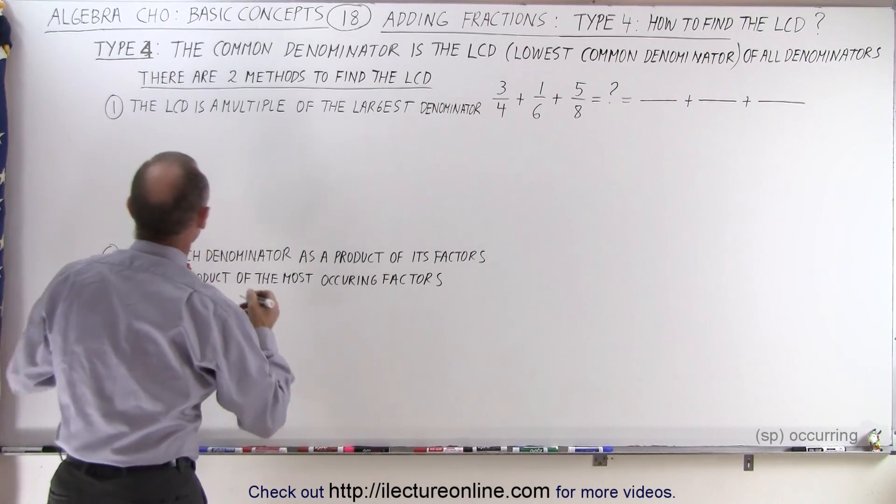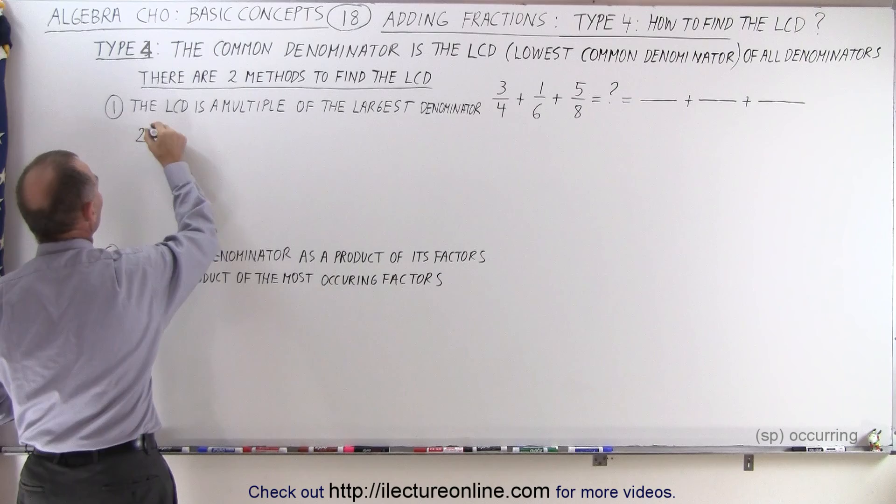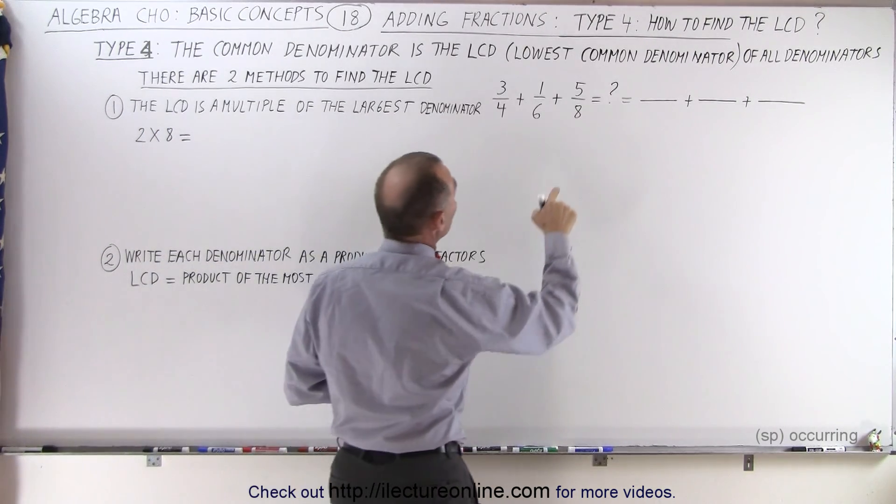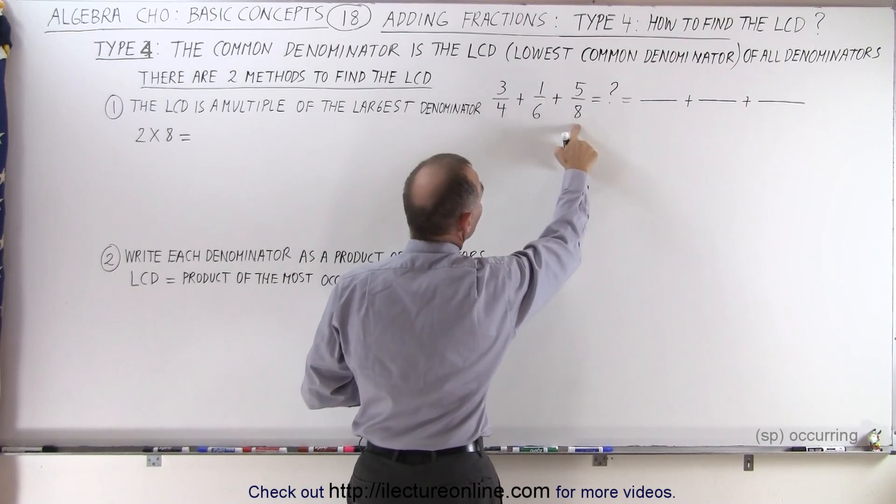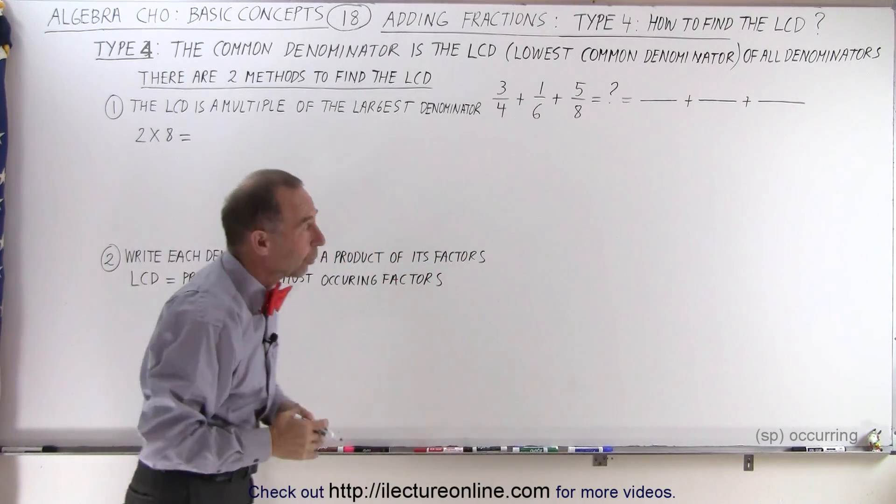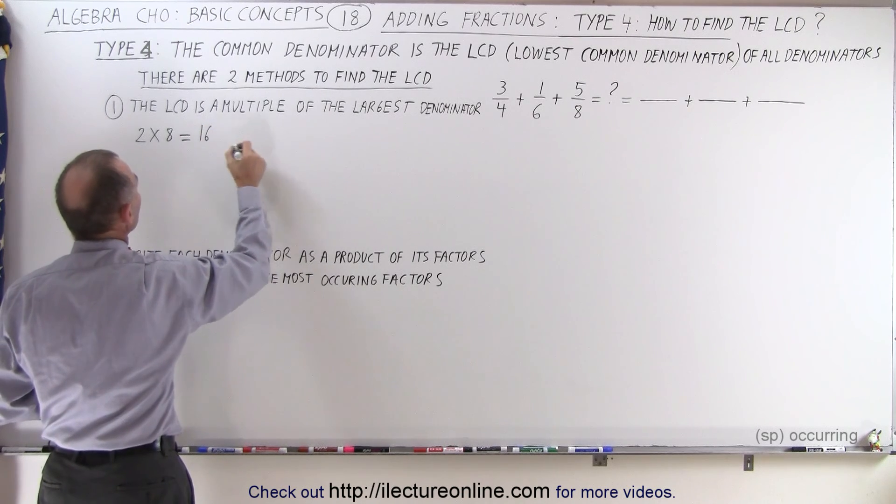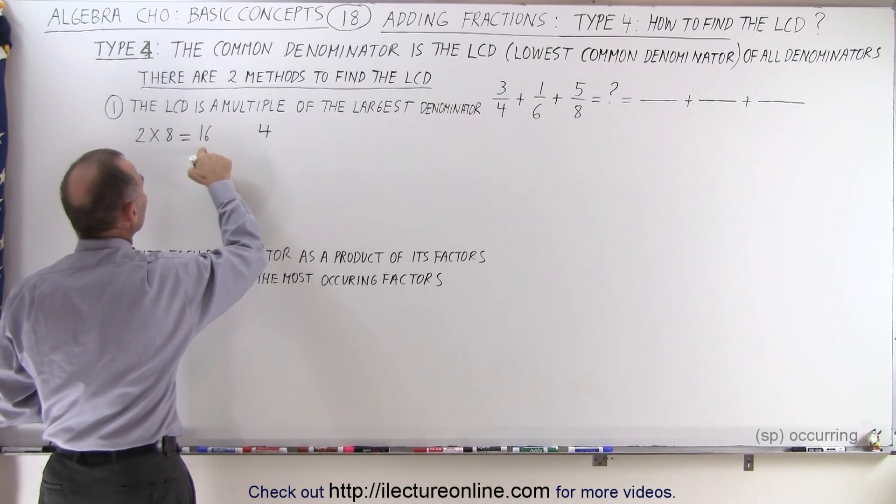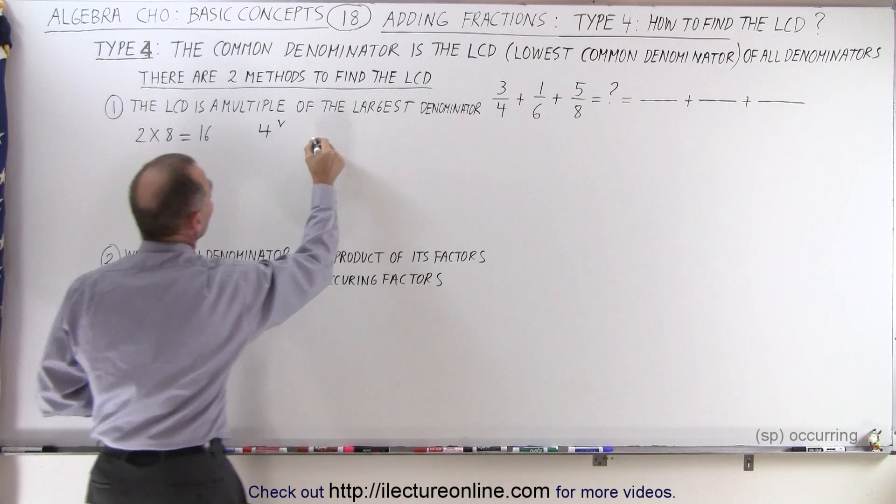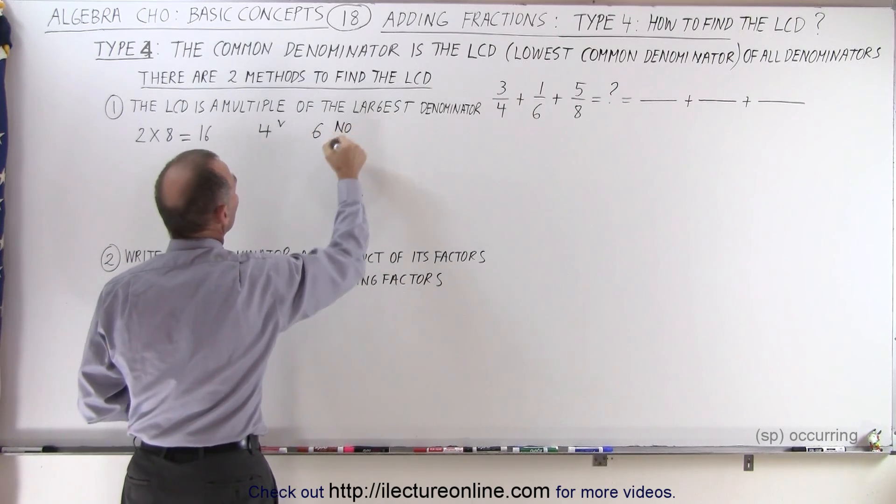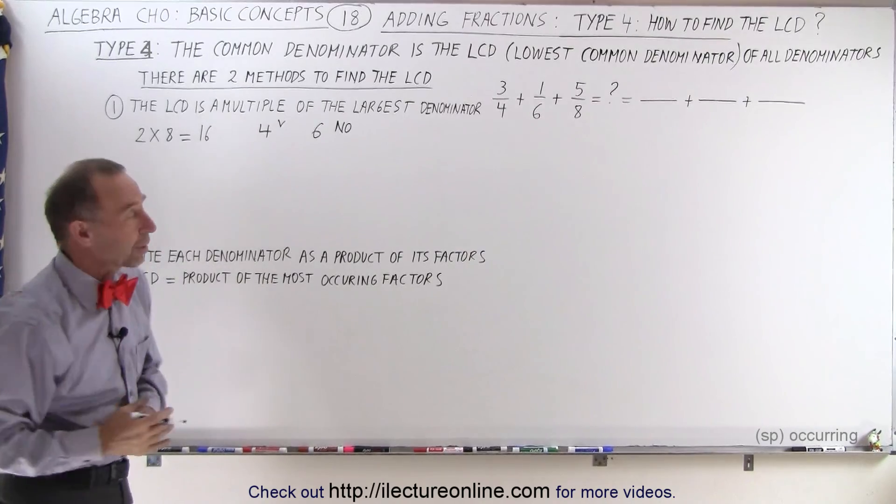So you do it like this. So you take 2 times 8. The reason why we don't start with 1 times 8 is because we already see that 6 doesn't evenly fit into 8, so 8 cannot be the lowest common denominator. So how about 2 times 8, which is 16? Does 4 fit evenly into 16? The answer is yes. Does 6 fit evenly into 16? The answer is no. So that cannot be the lowest common denominator.